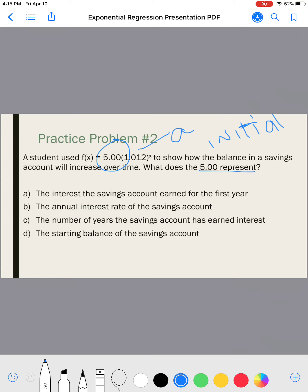So, let's look through it. A, the interest the savings account earned for the first year. Don't think of the amount of interest. Interest is a percentage, which would have been the R value. So, A, no. B, the annual interest rate of the savings account, no. The interest a savings account incurred would be the F of X minus the principal. Anyways, just skip what I just said.